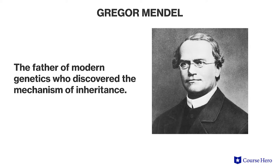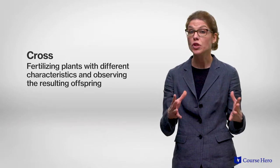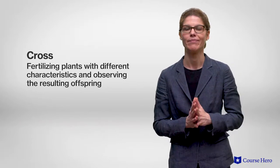Gregor Mendel, the father of modern genetics, proposed a law of independent assortment after carrying out crosses in which he followed the inheritance of two characteristics at once. Mendel observed that the inheritance of alleles for one character was independent of the inheritance of alleles for a different character. Even though Mendel didn't know about meiosis, today we can explain his law in terms of how chromosomes behave during meiosis.